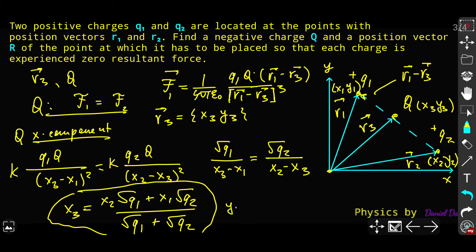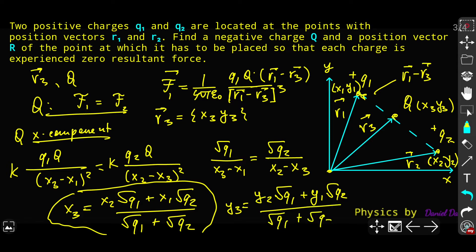The Y3 component follows the same approach. We get an identical structure for Y: Y3 equals (Y2·√Q1 plus Y1·√Q2) over (√Q1 plus √Q2). As you can see, the expression for Y3 is identical in structure to that for X3.